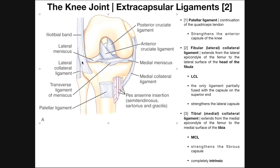We also have here the iliotibial band, which inserts on the lateral side of the tibia and is partially covering the LCL — the lateral collateral ligament. Recall that the LCL extends from the lateral epicondyle of the femur down to the lateral surface of the head of the fibula. The lateral collateral ligament again does not come into contact with the lateral meniscus.